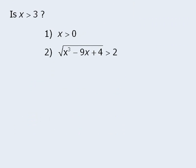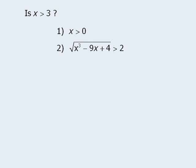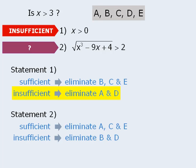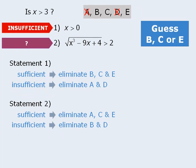Let's look at another example. Here we want to determine whether x is greater than 3. Statement 1 tells us that x is greater than 0, so it is not sufficient. Now statement 2 looks very confusing, so let's say that we are unable to determine whether or not this statement is sufficient. At this point we must guess, so what are the possible guesses? The elimination method tells us that if statement 1 is insufficient, then we can eliminate answer choices A and D. When we do this, three answer choices remain, so we will guess B, C, or E.